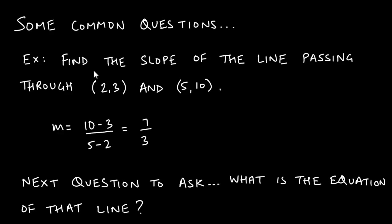Here's a common question: given two points, find the slope of the line passing through them. This should be routine at this stage. Using y2 minus y1 over x2 minus x1, the slope of the line connecting the two given points turns out to be 7/3. As a reminder, 7 is the change in output (the rise) and 3 is the change in input (the run).